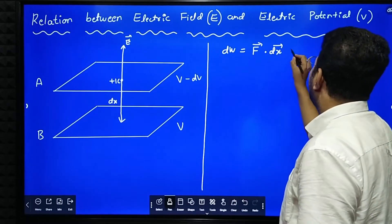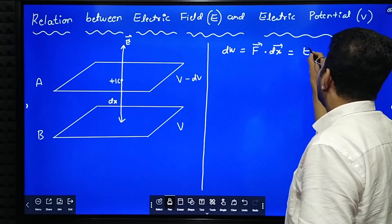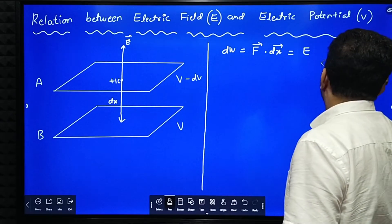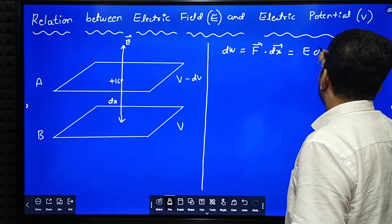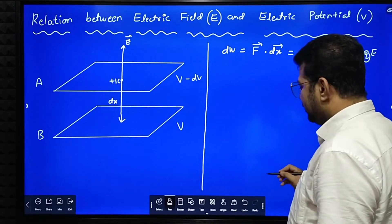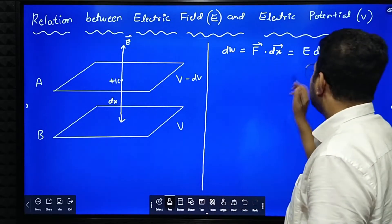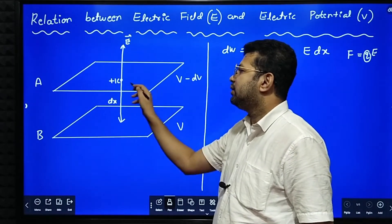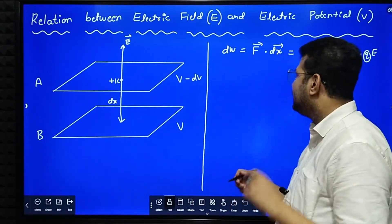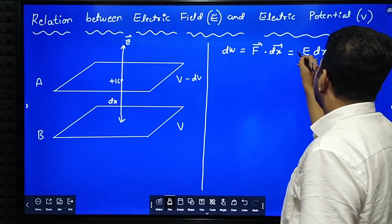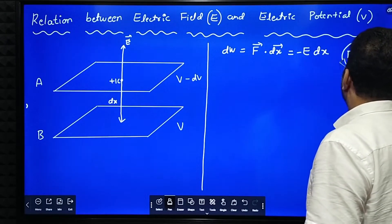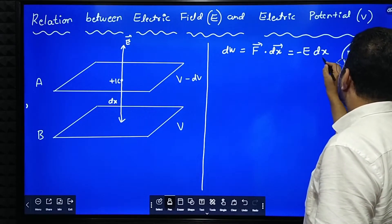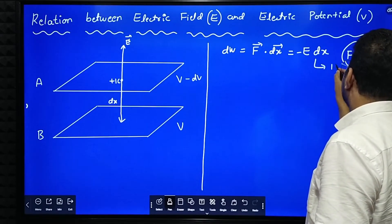In the place of F, I can write E. E dx cos theta. F means E. E into dx into cos theta. What is the angle between electric field and displacement? 180 degree. Force and displacement 180 degree. Cos 180 is minus 1. So therefore, I got dW is equal to minus E dx. I'll name this equation as equation number one. Say this is equation number one.